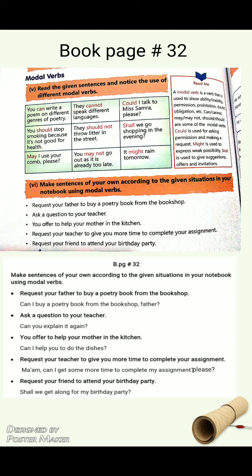You can see in this table: 'You can write a poem on different genres of poetry' — 'can' shows ability. 'You should stop smoking' — 'should' is the modal verb here used for prohibition. 'May I use your comb please?' — 'may' is used for permission. Can, may, and shall are modal verbs in present tense. When used in past tense, they become could, should, and might.